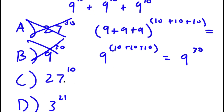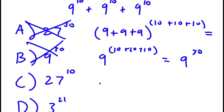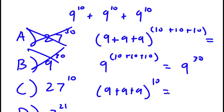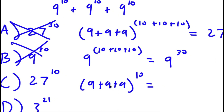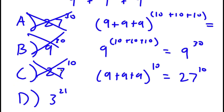For answer choice C, you add the bases and keep the exponents the same: 9 plus 9 plus 9 to the power of 10. Since 9 times 3 is 27, you get 27 to the power of 10. But this method is wrong as well — that's not the right way to add exponents.